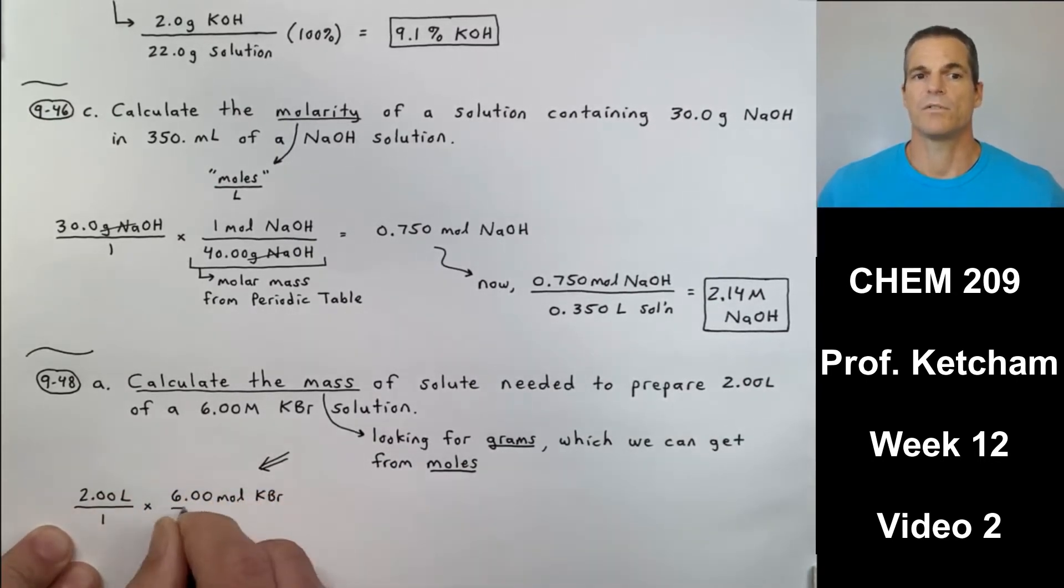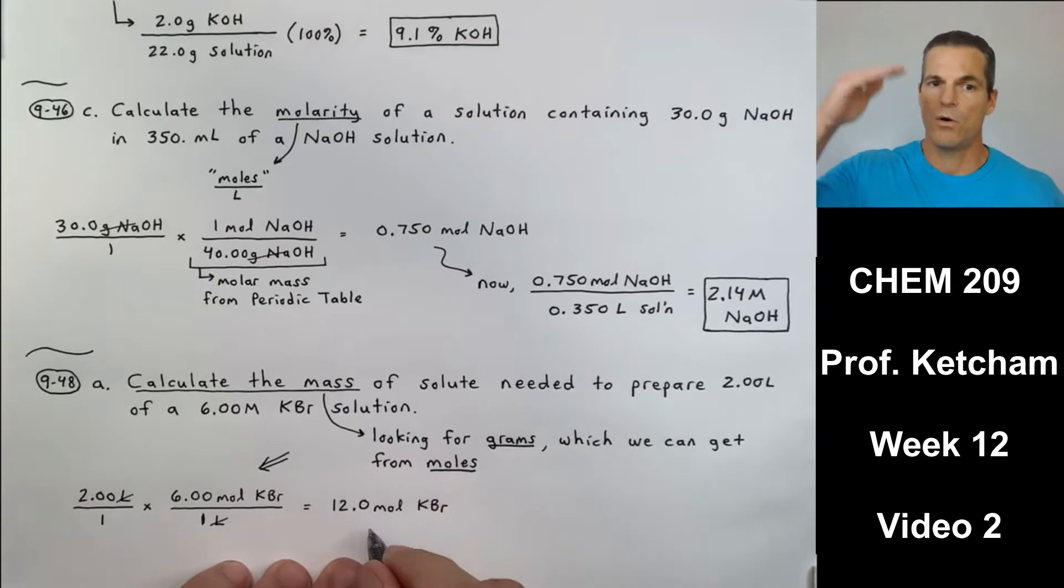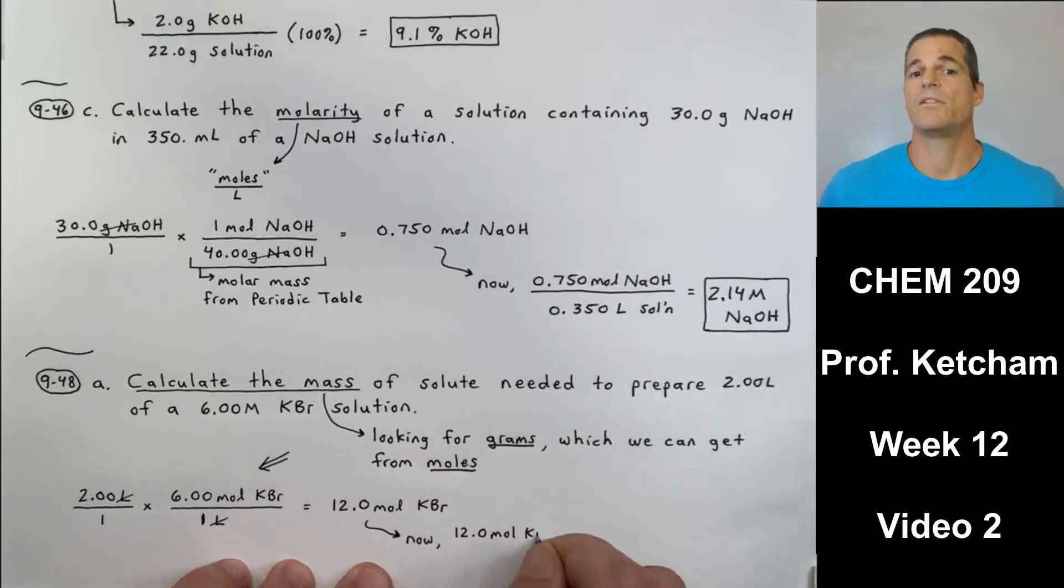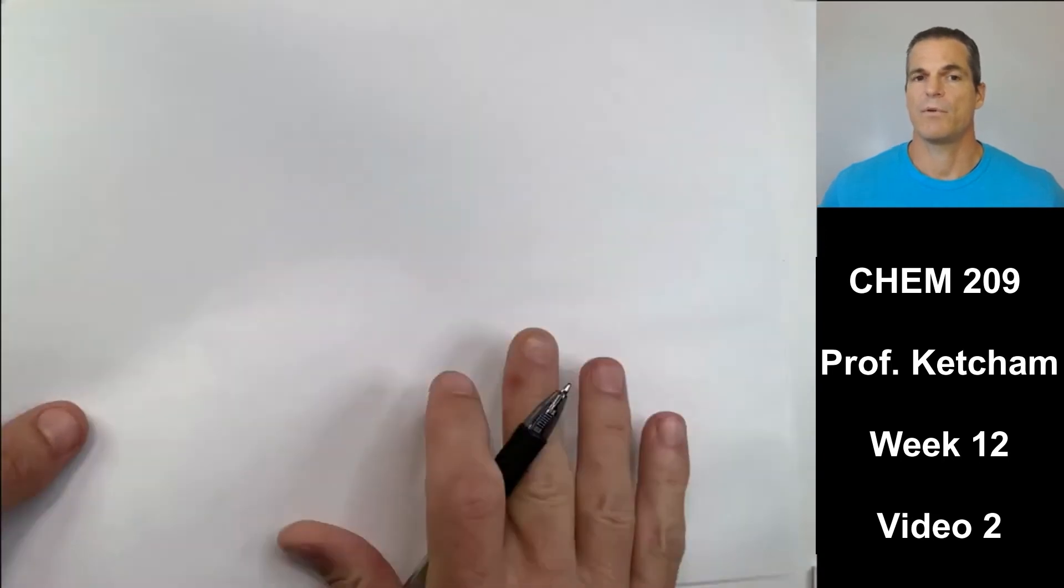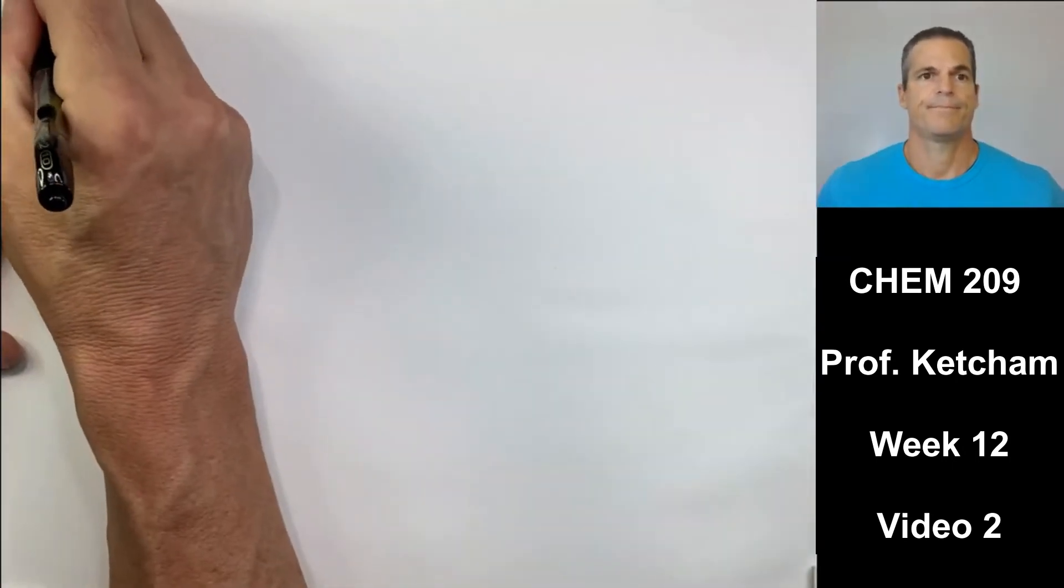First, I need to get to moles. So 2.00 liters over one times the molarity, but written as 6.00 moles KBr over one liter gives me 12.0 moles KBr. Now I just make that my start with what I'm given. Put it over one. Multiply by the molar mass of KBr, I get 1,430 grams KBr. KBr weighs 119 grams per mole on the periodic table. 1K and 1Br weighs 119.